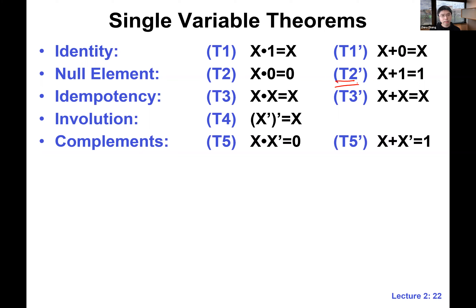And complements — this is also about cancellation. x AND x-prime gives zero: that's a contradiction, we cannot have both x and x-prime being true. For the dual theorem, x OR x-prime is one, because one of them will always be one.